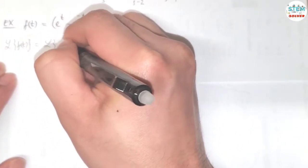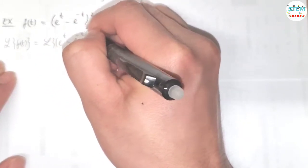I don't have the Laplace transform of the perfect square, e to the t minus e to the negative t squared. So L of f of t is equal to L of e to the t minus e to the negative t squared.